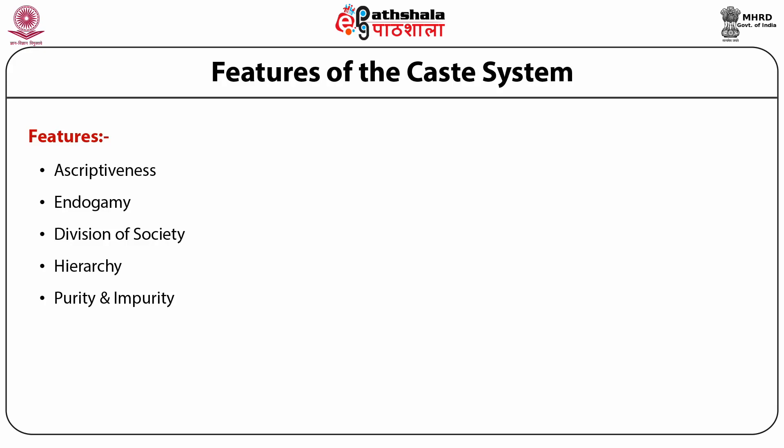Socio-economic interdependence: each caste exhibits a particular traditional occupation which they cannot change over time, so each caste depends on various other castes for survival, as a caste is only associated with one or two occupations while needing various other products and services obtainable only by associating with other castes. For example, Banyas are engaged in business, but during events like marriage or birth need to perform rituals which they can only do by associating with Brahmins, who have the expertise of priesthood, ritual performing, and teaching.